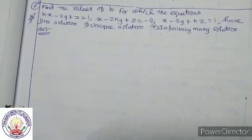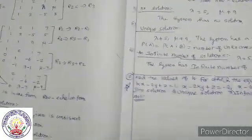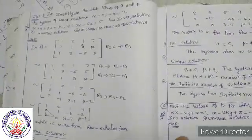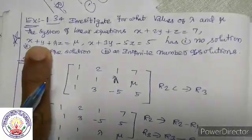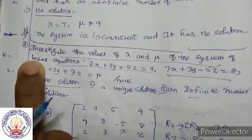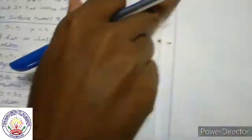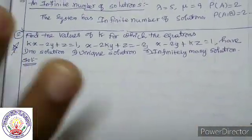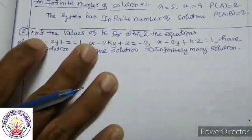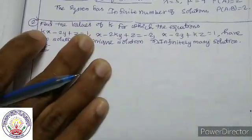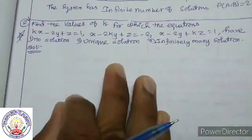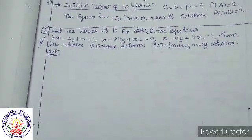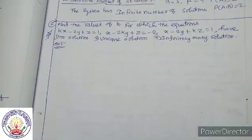That completes example 1.34. Third row letter and second row letter covered. You can see the next class in this summer discussion. Thank you, students.